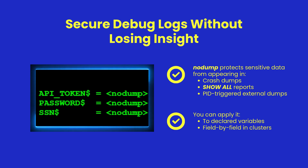ShearPower goes further by keeping your debug logs secure. With the no-dump attribute, you can shield passwords, tokens, and other sensitive fields from ever appearing in diagnostic files. It's fast, automatic, and protects your app from accidental data leaks.